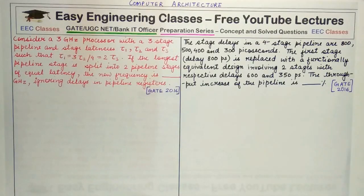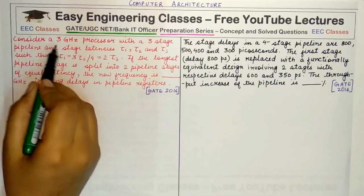Hello everyone, welcome to the preparation series from Easy Engineering Classes for various computer science exams like GATE, UGC NET, and Bank IT Officer exam. In today's lecture, we'll study two questions on computer architecture, and these two questions were a part of GATE 2016 paper.